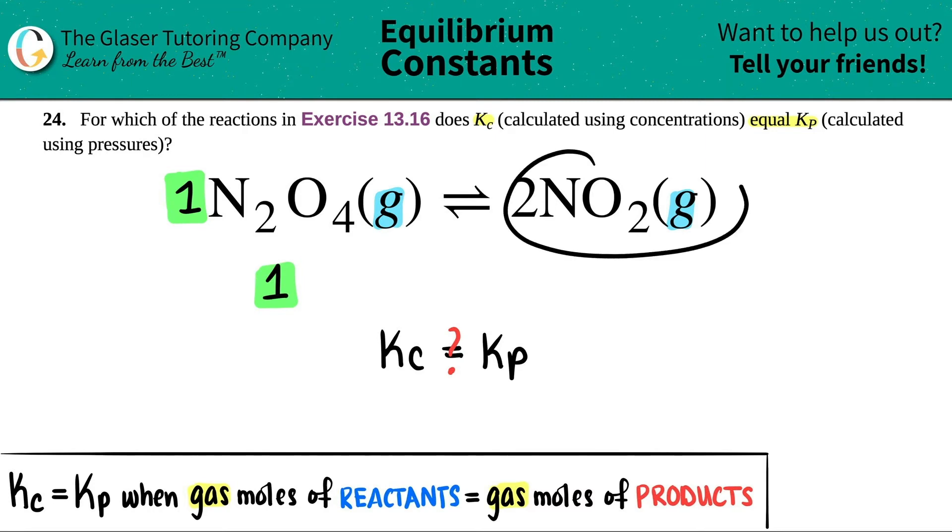Let's do the same thing for the product side. Here, NO2, there was a two in front of here, and that's the only product. So I have two moles of the gas of the product.